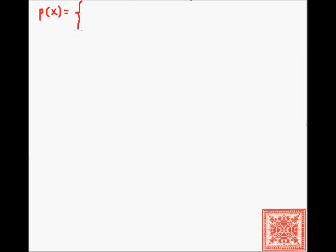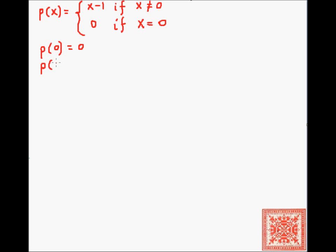Now let's show that the predecessor function — the previous natural number — is primitive recursive. The predecessor function is defined as: pred(x) = x minus 1 if x is greater than zero, and pred(0) = 0. There is no predecessor to zero because we stay in the natural numbers.